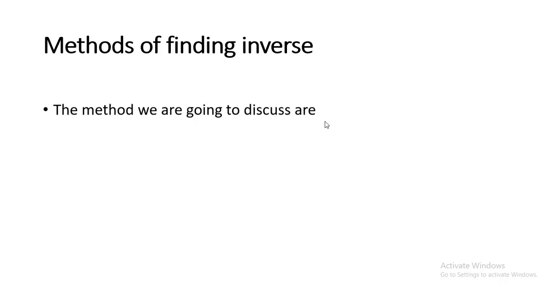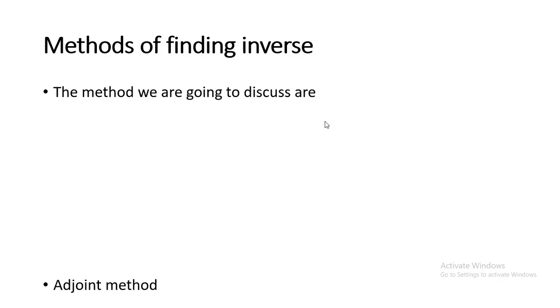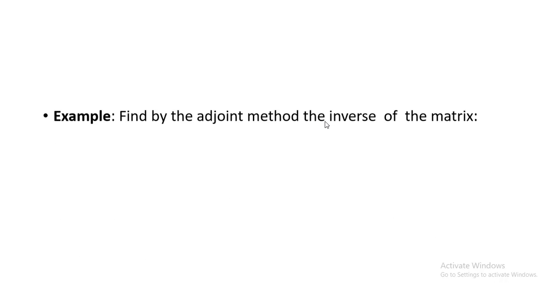Now the methods of finding inverses. The two methods we are going to discuss are the adjoint method and the Gauss-Jordan method. We will discuss how to find inverses using both of these methods. First, we will be learning how to find the inverse of a matrix by the adjoint method.